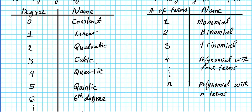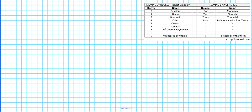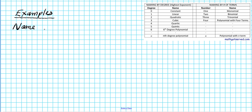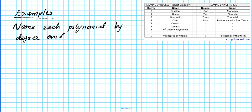Now let's look at some examples using a combination of information from both tables. We'll name polynomials by degree and number of terms. I have a reference chart here — if you'd like a copy, go to mathgotserved.com under the algebra 2 polynomials unit to download it. The instructions are to name each polynomial by degree and number of terms.